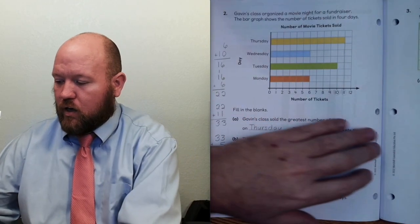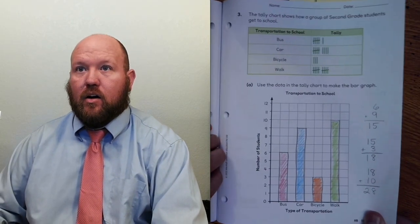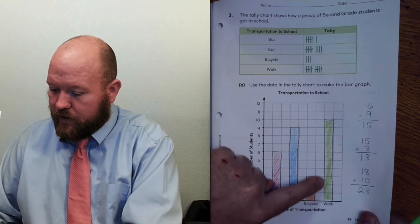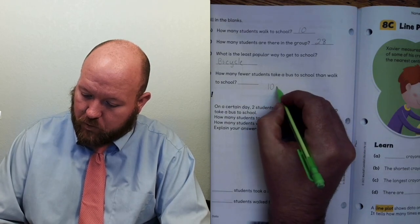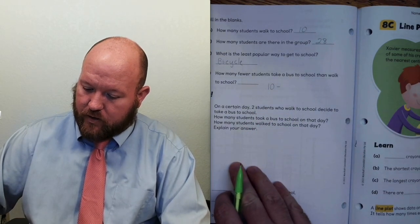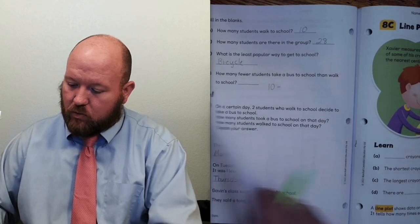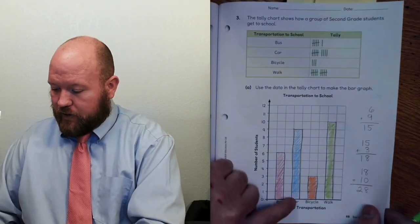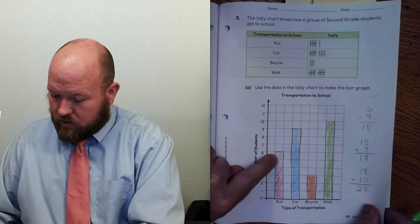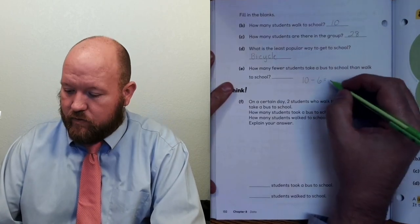How many fewer students take the bus to school than walk? Walk is 10; we're looking for difference, so we subtract. Bus is 6. Ten minus 6 equals 4 — there are 4 fewer students taking the bus than walking.